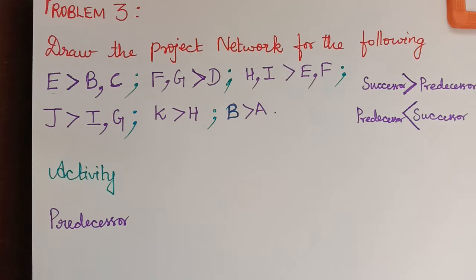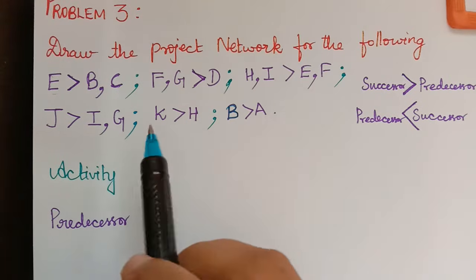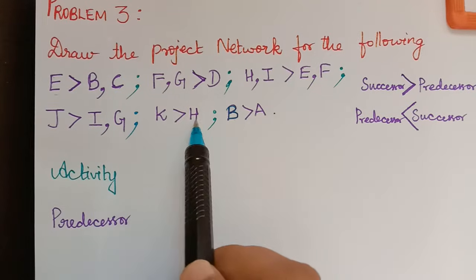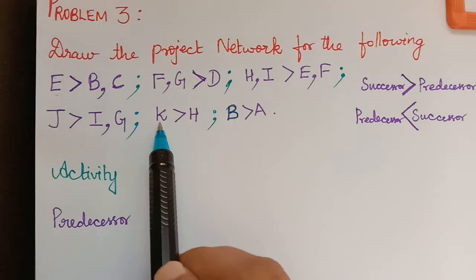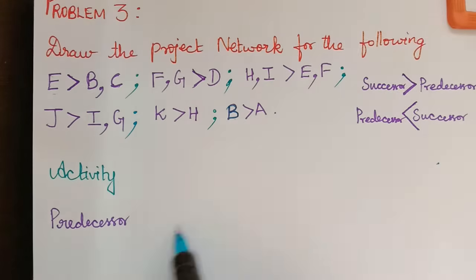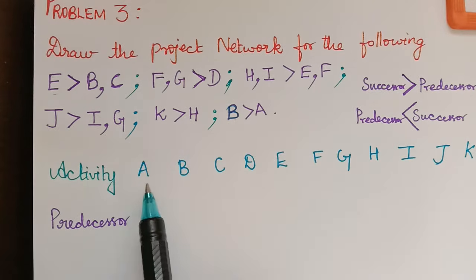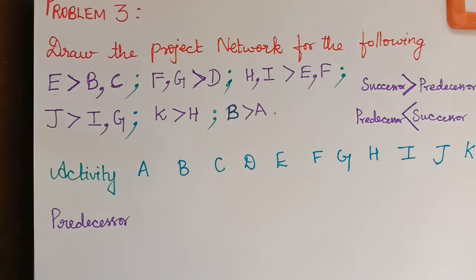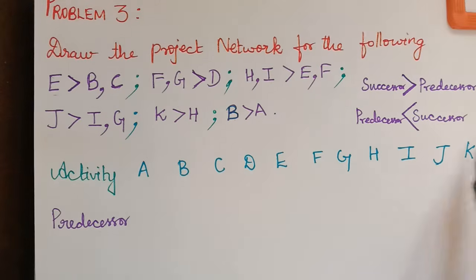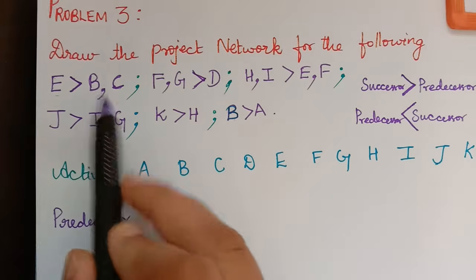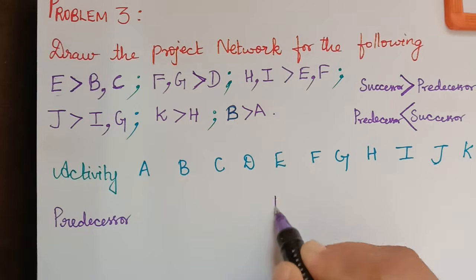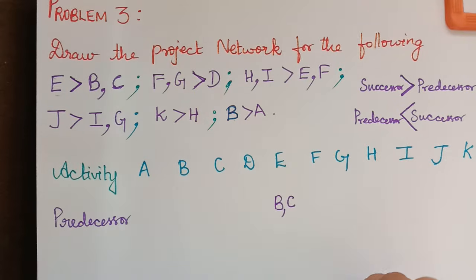The activities we have are A, B, C, D, E, F, G, H, I, J, K — from A to K. I have written all activities. Now let us write the predecessor of each. B and C are the predecessors for activity E, so for E we write B, C.